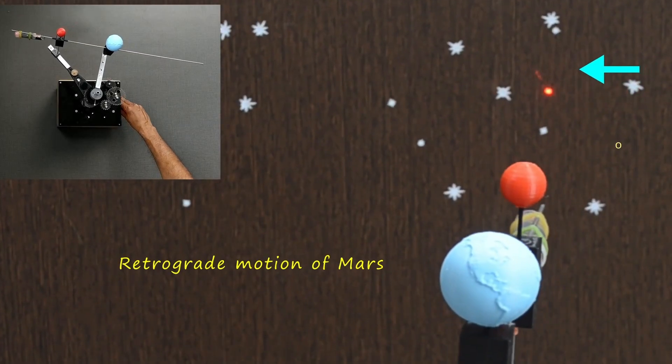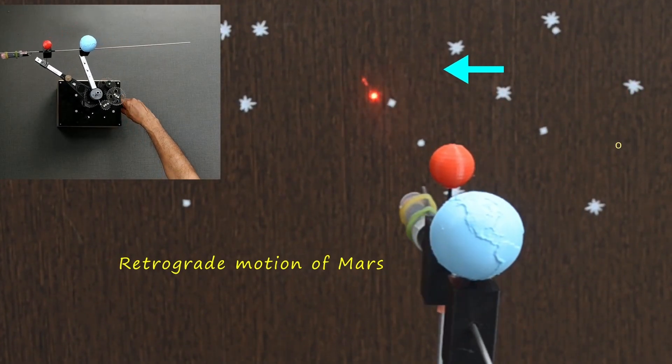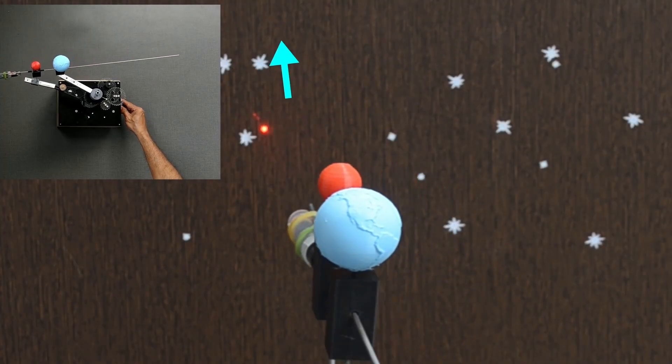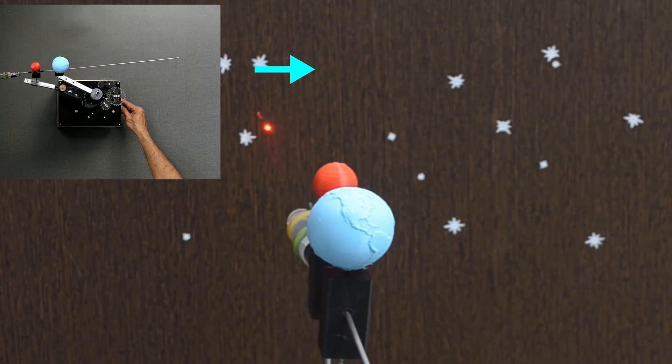Earlier, we have seen retrograde motion of Mars and why it happens. Similarly, Saturn also displays retrograde motion but it is more frequent, once in a year.